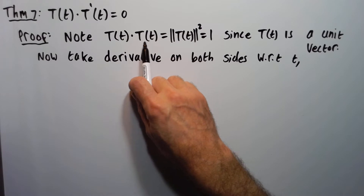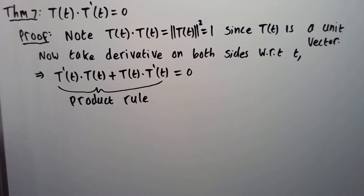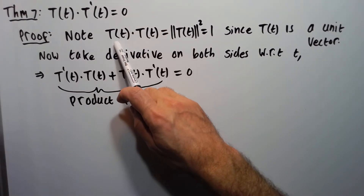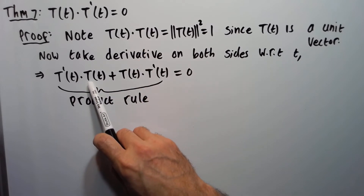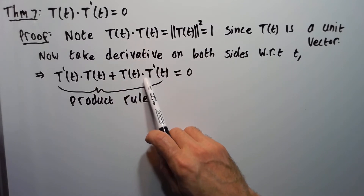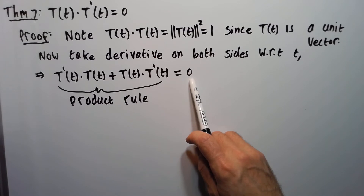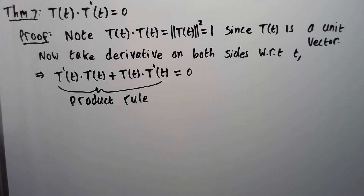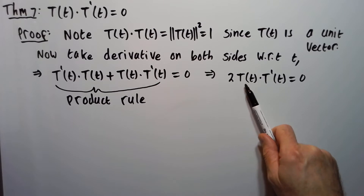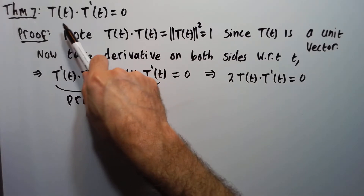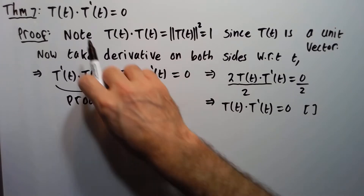Now take the derivative on both sides with respect to t. We use a product rule on the left side, and the derivative of 1 on the right is 0. Applying the product rule gives T prime dot T plus T dot T prime equals 0. These two terms are the same, so we can write 2 times capital T dot capital T prime equals 0. Dividing both sides by 2 gives our claim. So we're done with the proof.